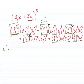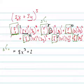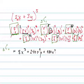So your expansion is going to be 32x to the fifth, plus 5 times 16 times 3, which is 240, so 240x to the fourth y. Your next term is 10 times 8 times 9, so 480x cubed y squared.